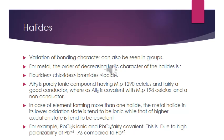If one element forms more than one halide, the metal halide with a lower oxidation state will be ionic compared to the one with a higher oxidation state, which will be covalent in nature. For example, PbCl2 is ionic and PbCl4 is covalent. This is due to the high polarizability of Pb4+ compared to Pb2+. Polarizability refers to the extent to which the electronic cloud can be distorted.